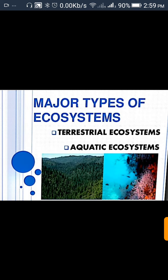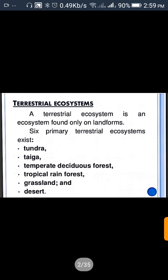Terrestrial ecosystem is an ecosystem found only on landforms. The 6 primary terrestrial ecosystems are: Tundra, Taiga, Temperate Deciduous Forest, Tropical Rainforest, Grassland, and Desert. We will discuss all these ecosystems.